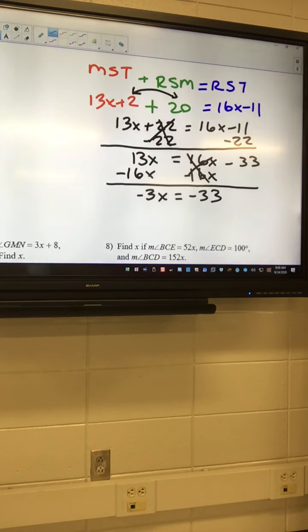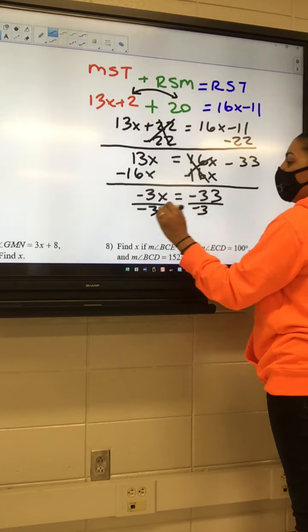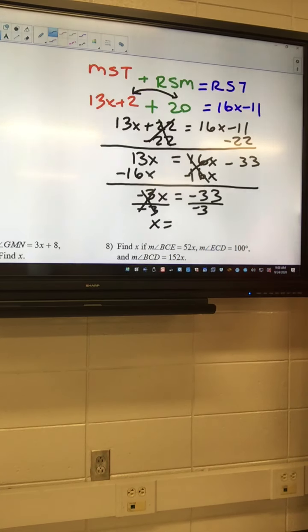And then our last step is to do what? Division. Division. So divide by negative 3. So X equals, and I got a negative 33 divided by negative 3. Let me punch it in. 11.